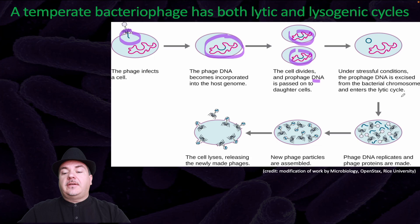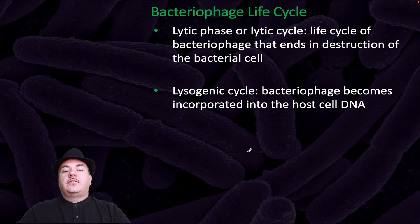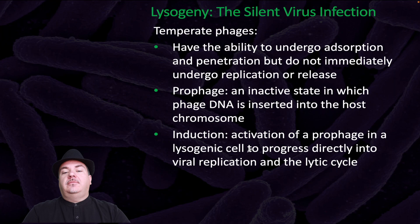Once the lytic cycle is entered, the phage DNA replicates and phage proteins are made, new phage particles are assembled, and then the cell lyses releasing the newly made phages. The bacteriophage life cycle can be the lytic cycle — ending in destruction of the bacterial cell — or the lysogenic cycle, where the bacteriophage becomes incorporated into the host cell DNA. Lysogeny is often called the silent virus infection.